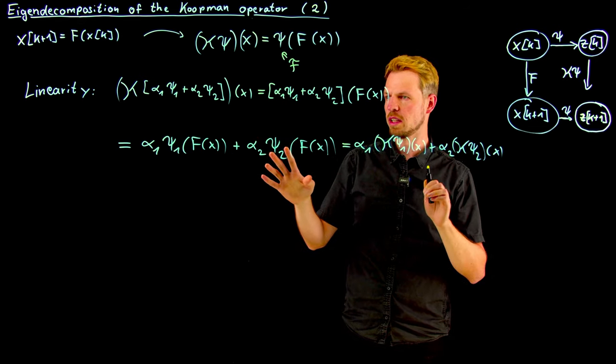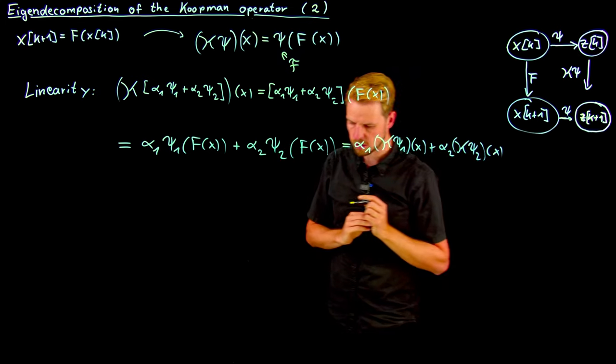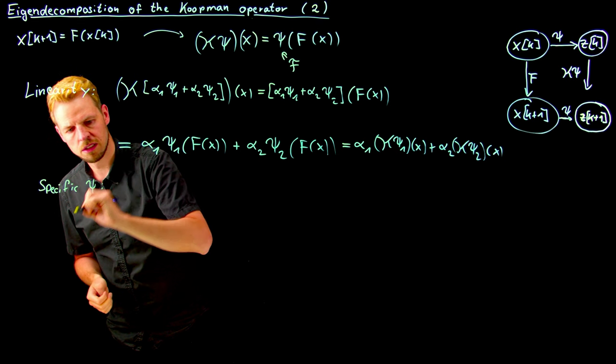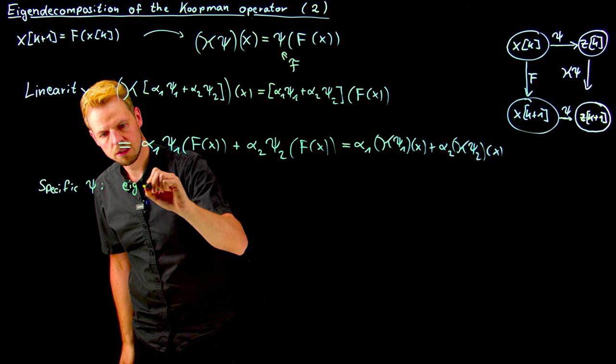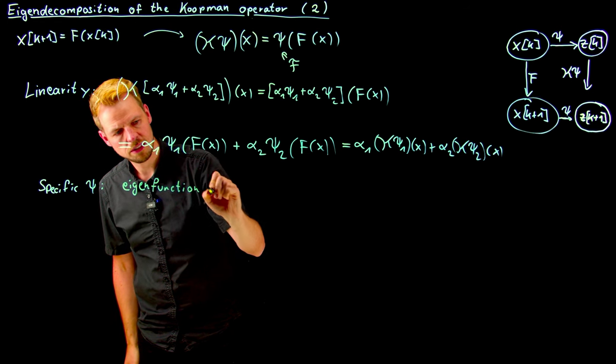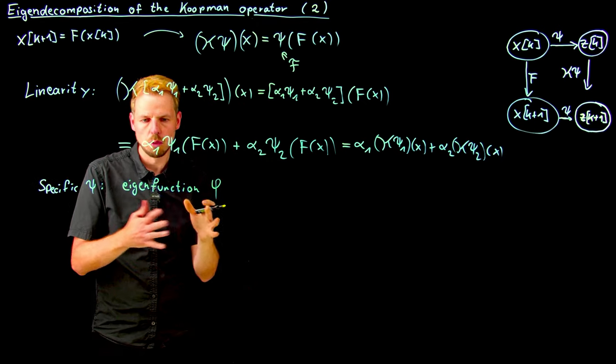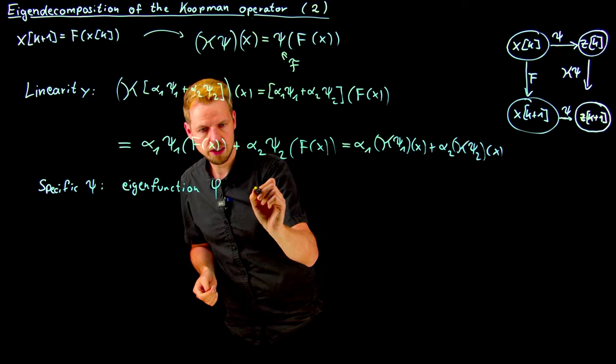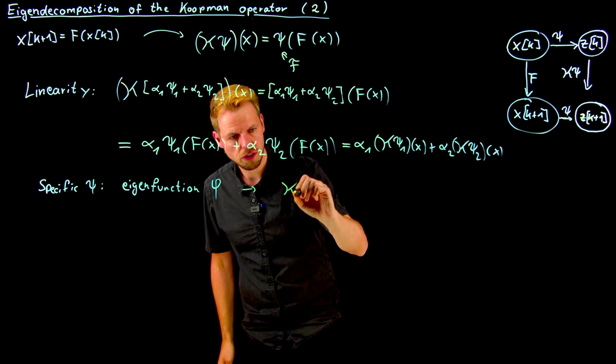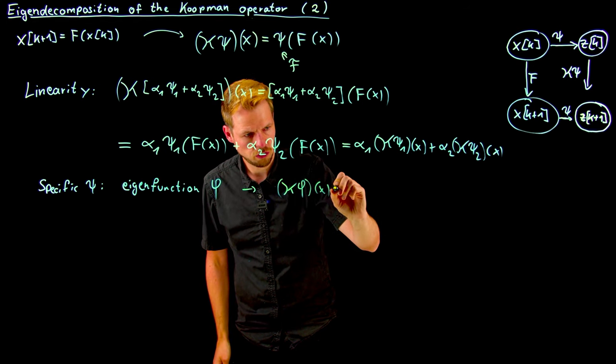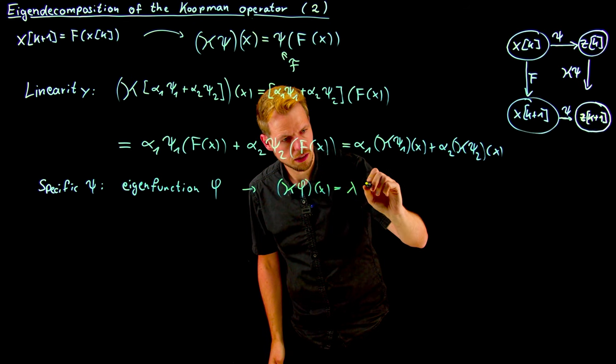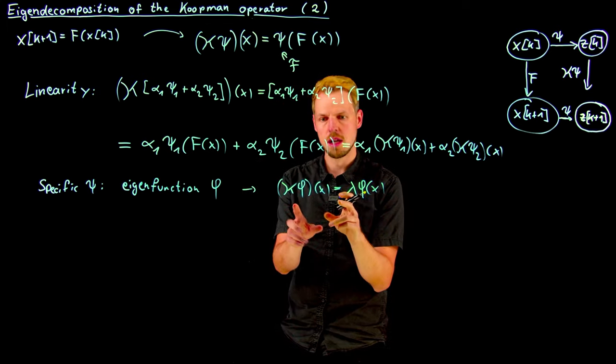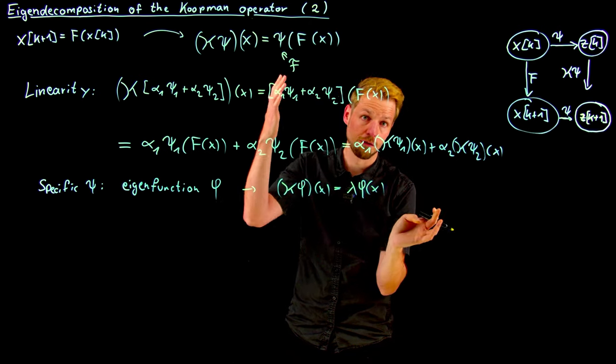What we can do now is study specific observables that have favorable properties. So what we're going to define is a specific observable which is going to be an eigenfunction phi. If we recall what we defined as an eigenvector and eigenvalue for finite dimension operators, matrices, we can simply do the same here. What this means is that the evaluation of this specific function has to result in using a scalar multiplication by the associated eigenvalue on this function. So very similar to the eigenvalue equation in finite dimensions, just here it's functions instead of vectors in finite dimension.